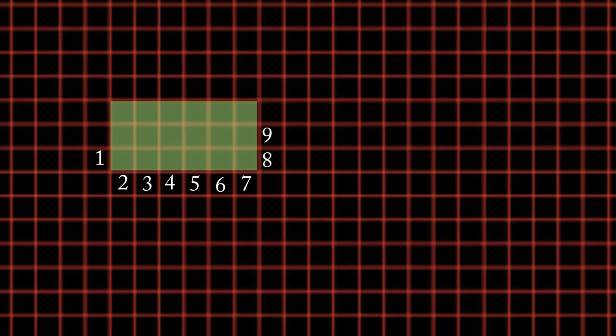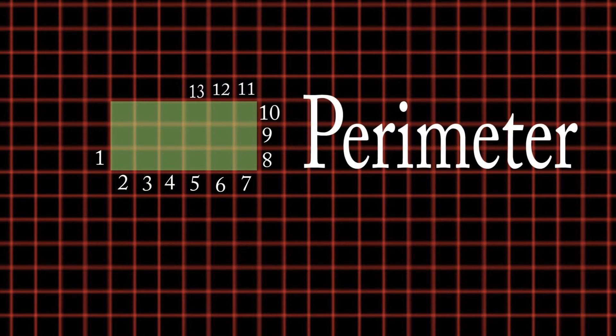Now take a gander at this rectangle. It's got a perimeter of 1, 2, 3, 4, 5, 6, 7, 8, 9, 10, 11, 12, 13, 14, 15, 16, 17, 18 units. It's got 18 units as its perimeter.